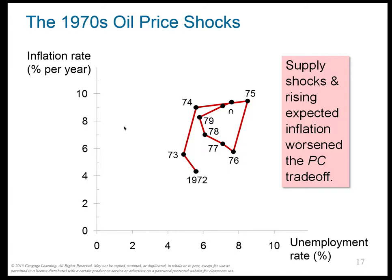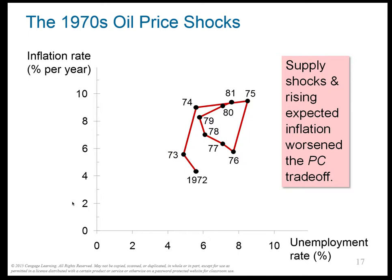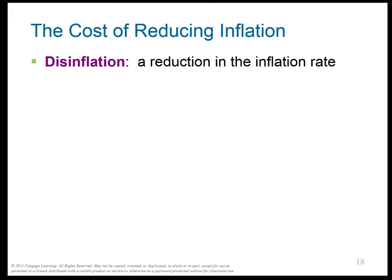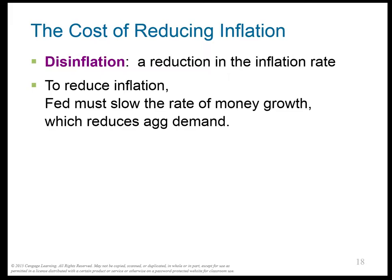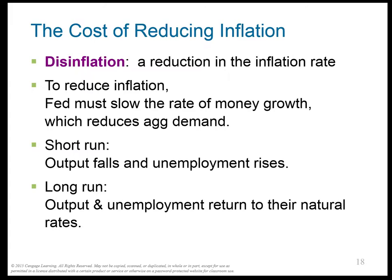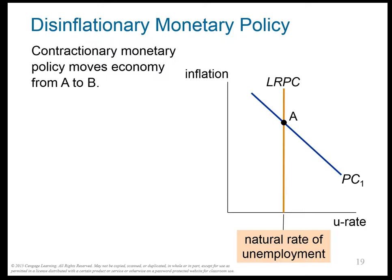The first oil problem in 1973 made unemployment and inflation get even worse. Then things started recovering, but in 1979 the Iranian Revolution caused oil prices to spike again, once more pushing unemployment and inflation higher. Eventually people decided inflation had to be reduced — it was approaching 10%. Disinflation is what it's called when you reduce the inflation rate. To reduce the inflation rate, the Fed's only tool is to move the AD curve to the left, which brings the price level down. In the short run, this is a big problem because real GDP and output fall, which makes unemployment rise. In the long run, however, output and unemployment go back to their natural rate.